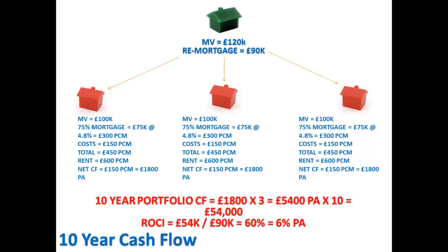Some of that money is going to go towards paying the interest or repaying the £90,000 that you borrowed on your residential mortgage, because you've leveraged it. We're not going to go into exact detail on how much goes to repay the £90,000, because over a 10-year period the other properties are going to increase in value sufficiently to give you that money back anyway. We'll assume the income is £5,400 per annum — but please make sure you factor in the cost of that £90,000 residential mortgage.